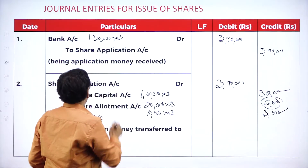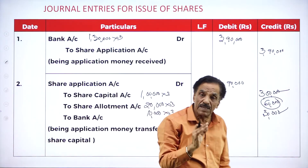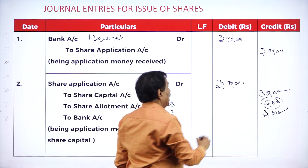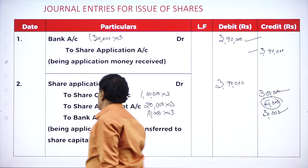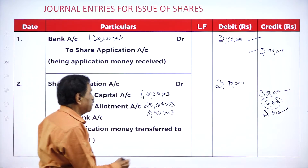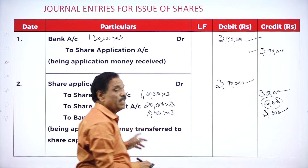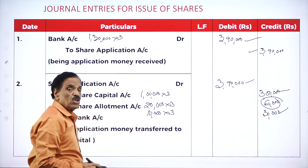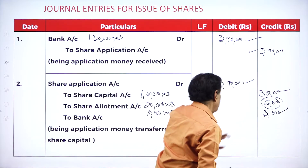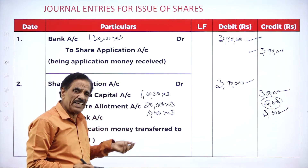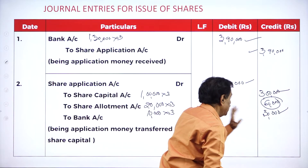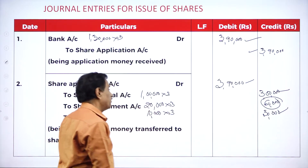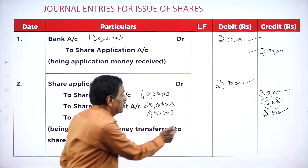First: how many applications received? 1,30,000. Application fee: 3 rupees. Entry: bank account debit — 3,90,000 to share application account 3,90,000. Next entry: share application account 3,90,000 — actually require 1,00,000 into 3 = 3 lakh. Adjusted to allotment: 20,000 shares, 20,000 into 3 = 60,000. Rejected and refunded: 10,000 application, 10,000 into 3 = 30,000. Adjusted to allotment: 60,000. Refunded: 30,000.